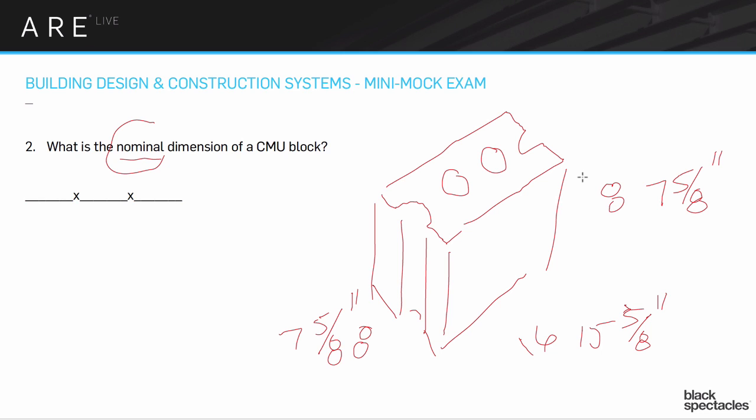The advantage of the CMU block is there's all sorts of advantages. It's very strong material, it has all the holes in it. Why does it have holes? So you don't have to carry a giant chunk of concrete, so it's lighter in terms of placing it. It also allows you to put rebar going through so things can be tied together.